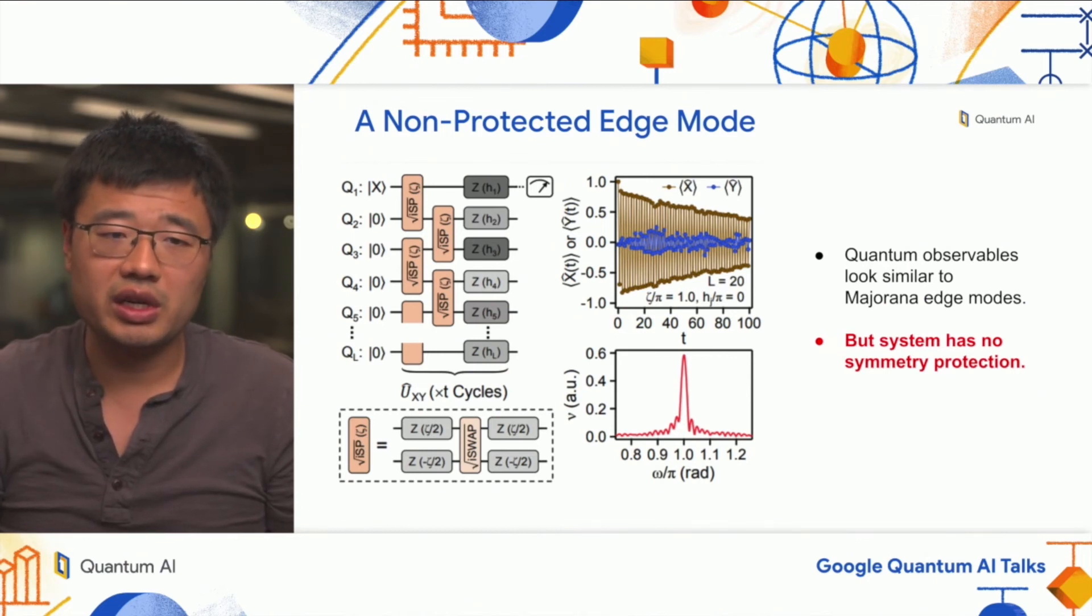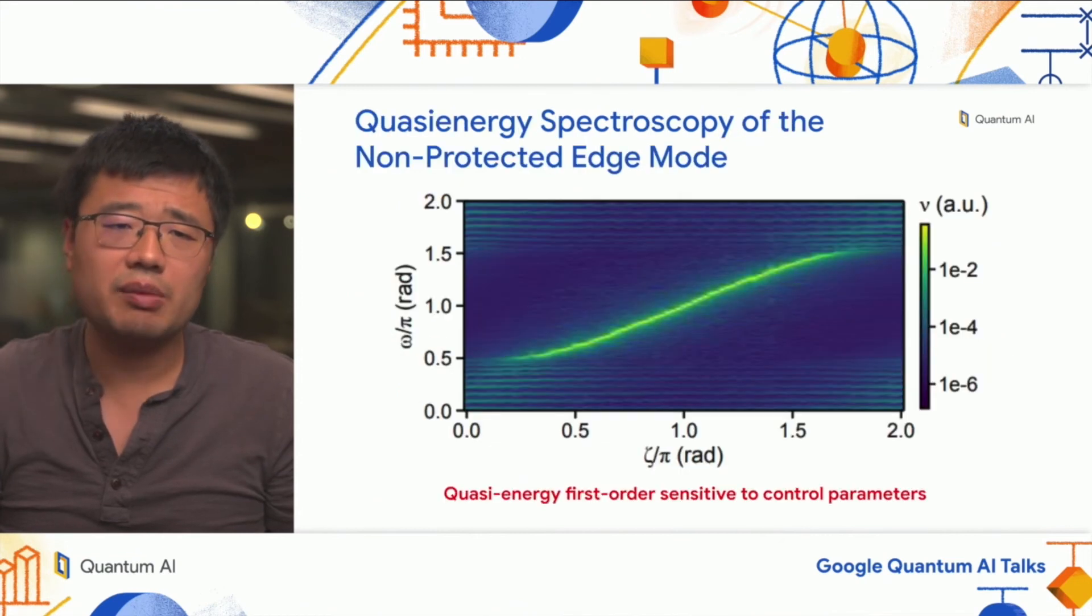This is done by a Trotterized version of the XY model with local field Z. The quasi energy of this system can be tuned where if you look at the observables on edge, they oscillate much like the Majorana edge modes and have a quasi energy peak at pi, same as the Majorana edge modes. But if you repeat the process of quasi energy spectroscopy for this system, you realize that although the system does have the bulk energy gap—there's a bright band in the middle separated from bands on edges—there's nowhere on this control parameter space where the quasi energy of the XY edge mode is insensitive. Everywhere, this edge mode energy is dependent on the control parameter, meaning any fluctuation might lead to dephasing.